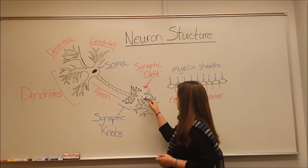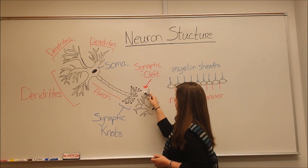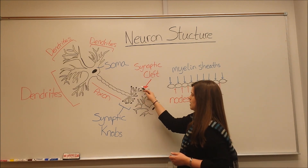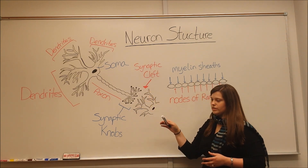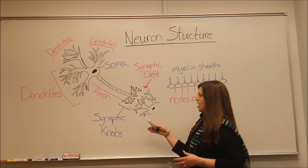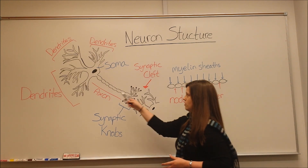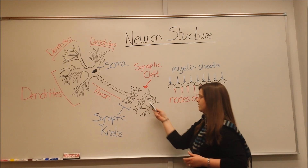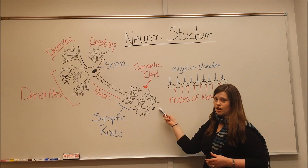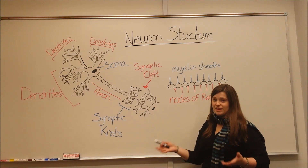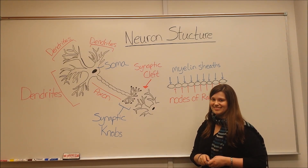These synaptic knobs are able to reach out and connect with other dendrites. I've drawn another neuron here — these synaptic knobs can reach out to dendrites of multiple surrounding neurons, so that the original signal this neuron received gets propagated to other nearby neurons. And that's basically how the nervous system makes things happen in your body. I'll see you soon.